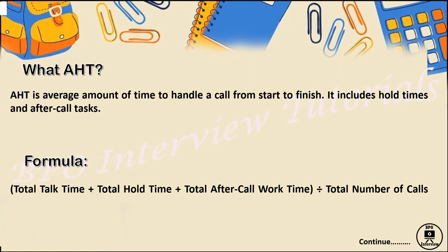The formula is straightforward: total talk time — the time the customer was engaged with the employee — plus total hold time, which is the time the call was kept on hold and then resumed, plus total after call work — the tasks done after the call ends — all divided by the total number of calls taken on that particular day. This gives you the AHT.